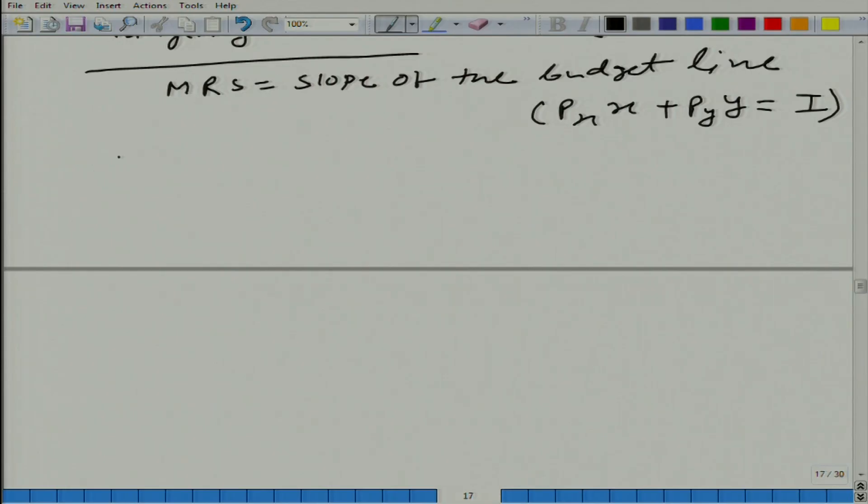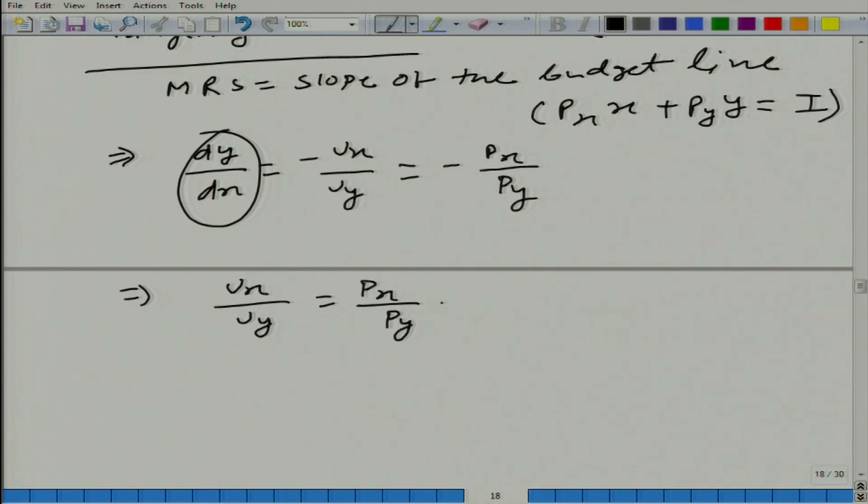And how much is this? This is what we have figured out. So, dy/dx is equal to -u_x/u_y, and this should be equal to, that is the tangency criteria, -p_x/p_y. Or if we leave this part, what we get is u_x/u_y should be equal to p_x/p_y, or in other words, u_x/p_x should be equal to u_y/p_y.